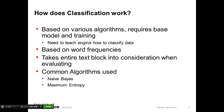How does classification work? We need to create a base model and train it to classify the data. The algorithm classifies data based on word frequencies in the text block, and for evaluating the data, the algorithm considers entire text blocks. The user needs to teach — that is, train — the model how to classify data. The algorithms used in Informatica Data Quality are Naive Bayes and Maximum Entropy.